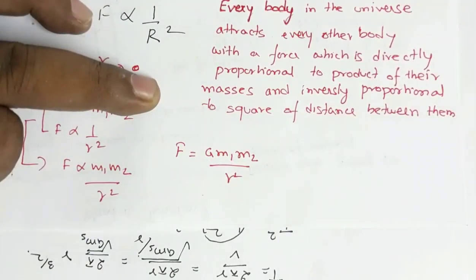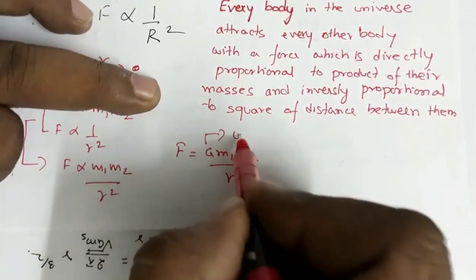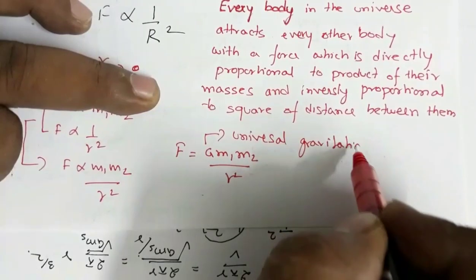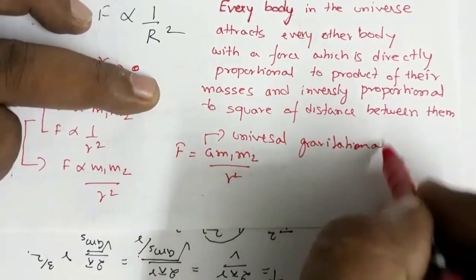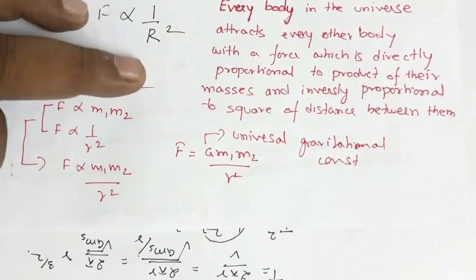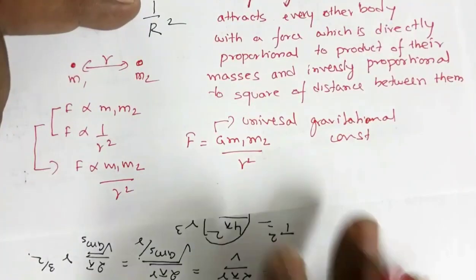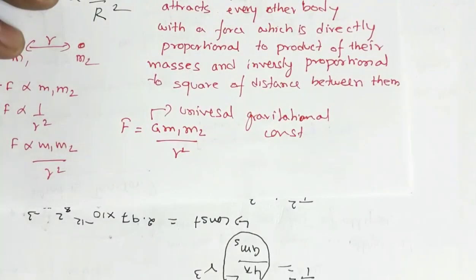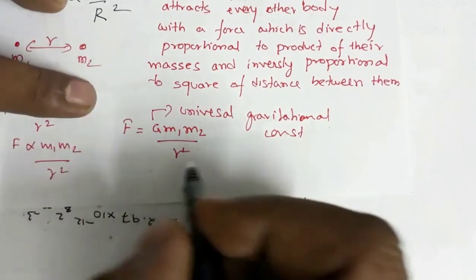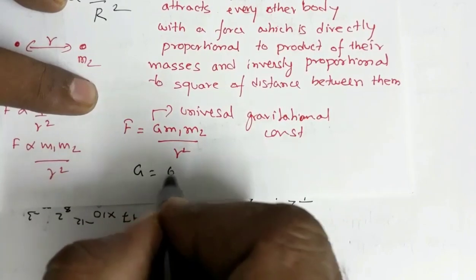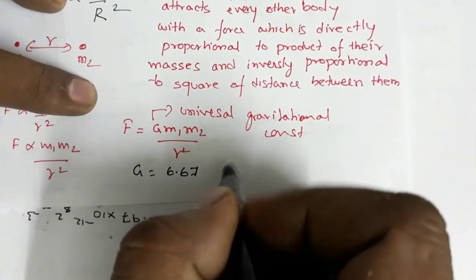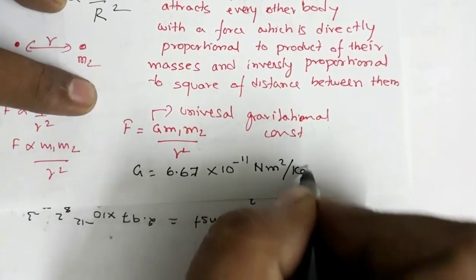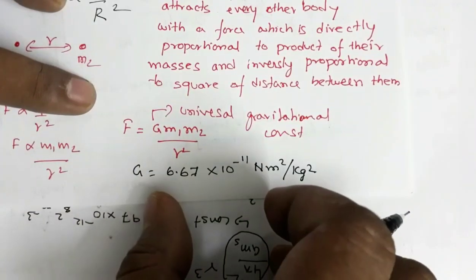Here G is called the universal gravitational constant. The value of this universal gravitational constant G is equal to 6.67 × 10⁻¹¹ N·m²/kg².